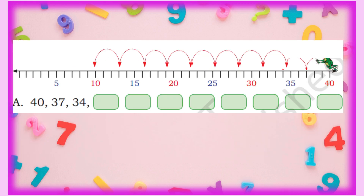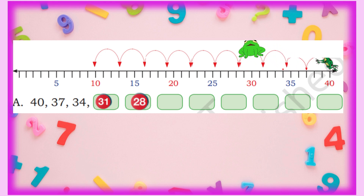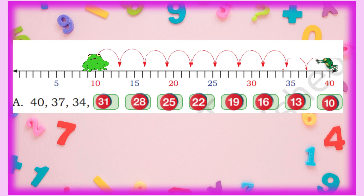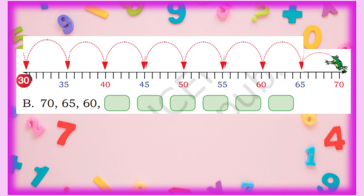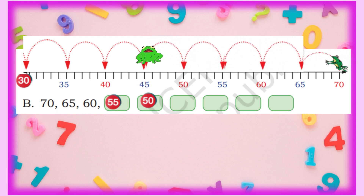Next: the frog starts from 40 and jumps backward. The sequence is 40, 37 — there is a gap of 3. So: 34, 31, 28, 25, 22, 19, 16, 13, 10. The frog jumps in gaps of 3. Next: the frog starts from 70 and jumps backward in gaps of 5: 65, 60, 55, 50, 45, 40, 35, 30.